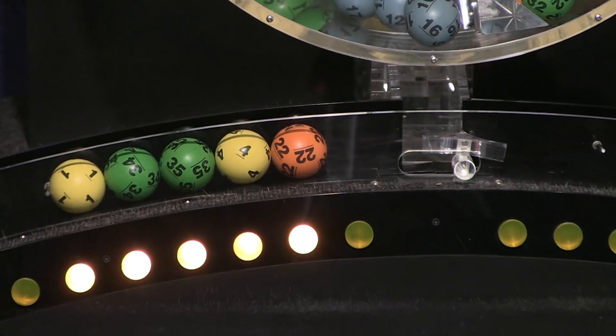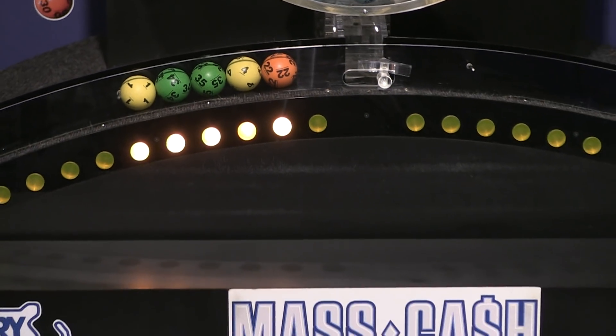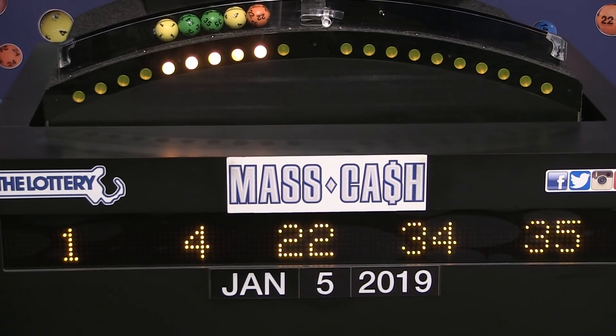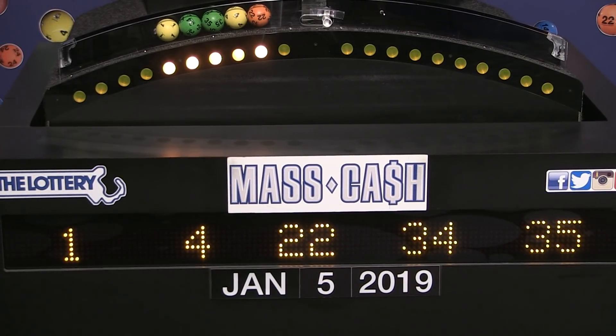Once again, the winning Mass Cash numbers for Saturday, January 5th are 1, 4, 22, 34, and 35. We'll see you shortly for the Megabucks Doubler and Powerball drawings.